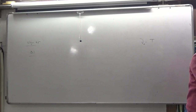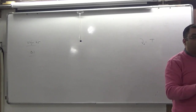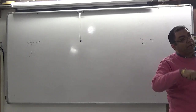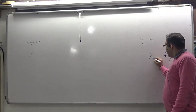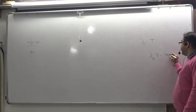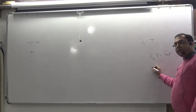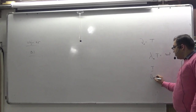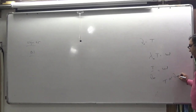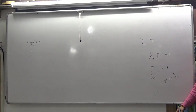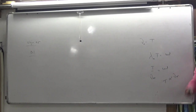In Wien's Displacement Law, lambda-max (lambda-m) means maximum lambda — the wavelength at which maximum emission occurs. I know that lambda-m multiplied by T is a constant. I also know that lambda is inversely proportional to frequency, so temperature is directly proportional to frequency. If x is proportional to y, the graph is a straight line passing through the origin — option number B.